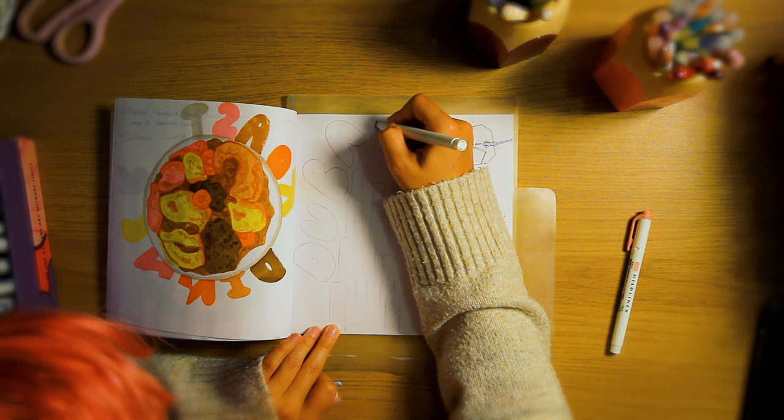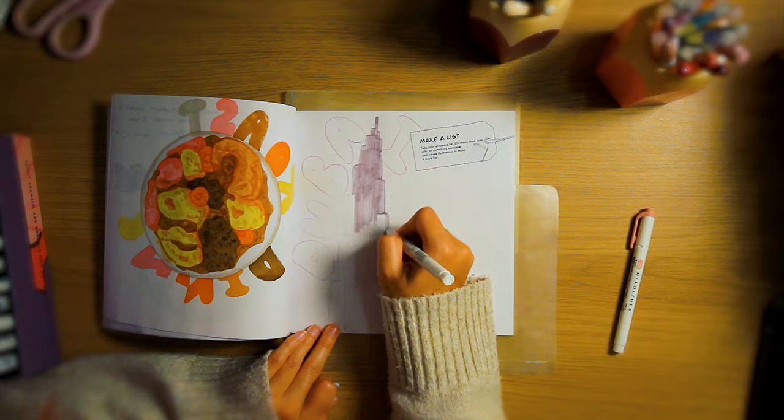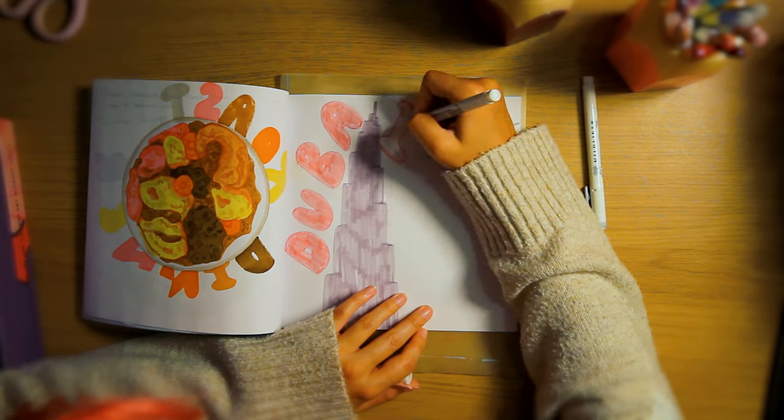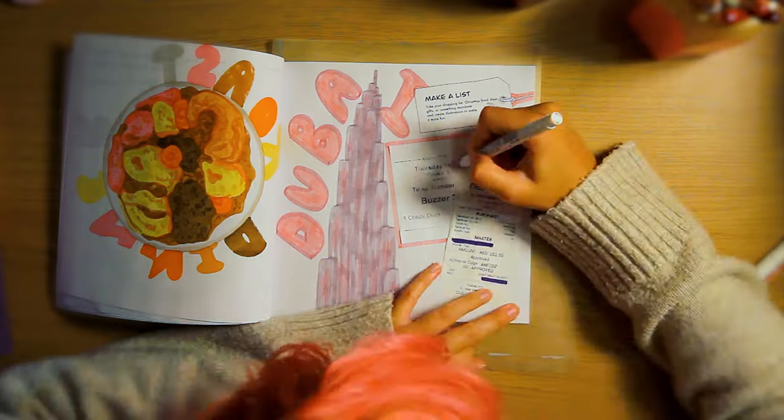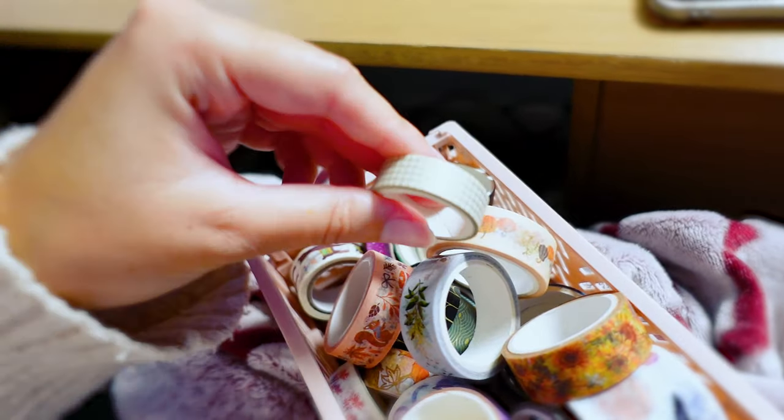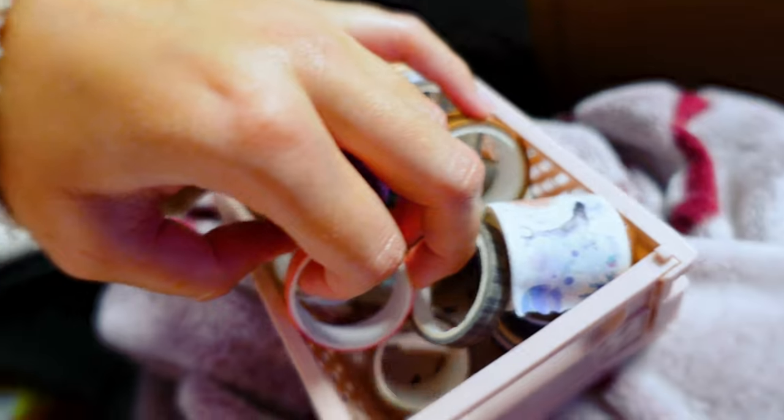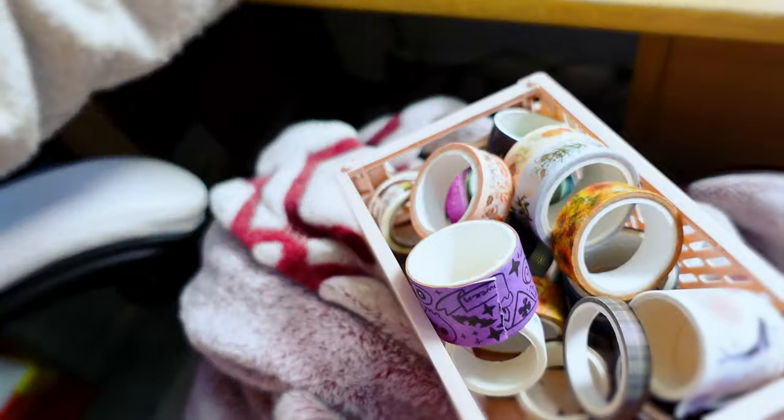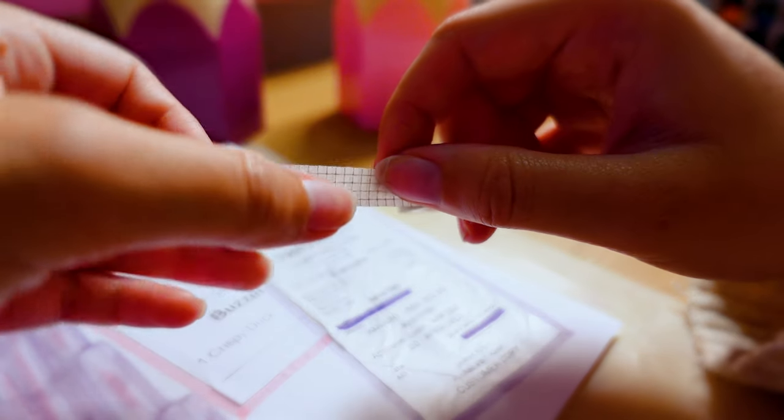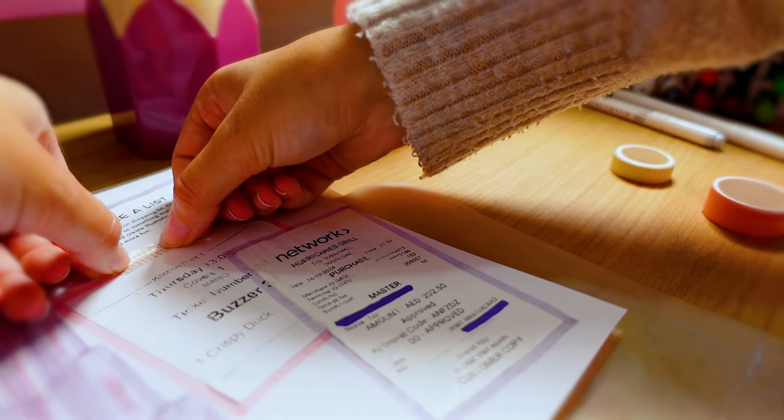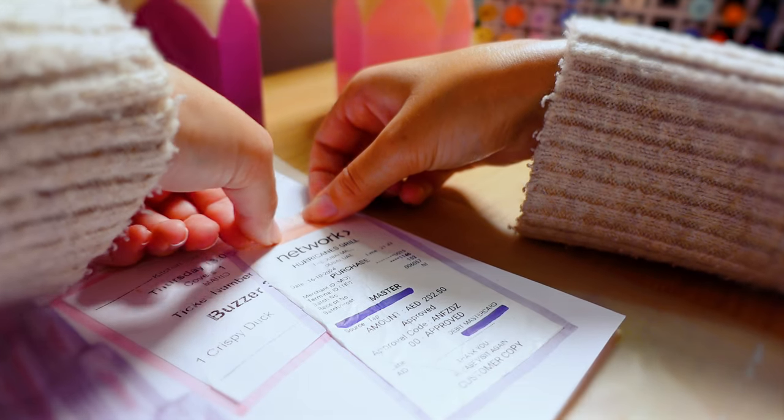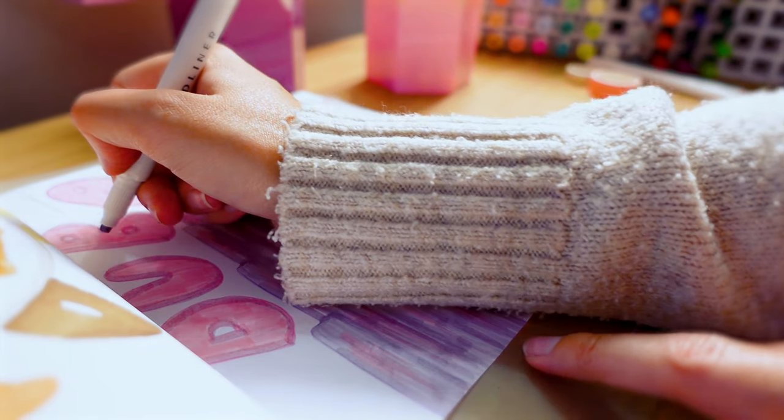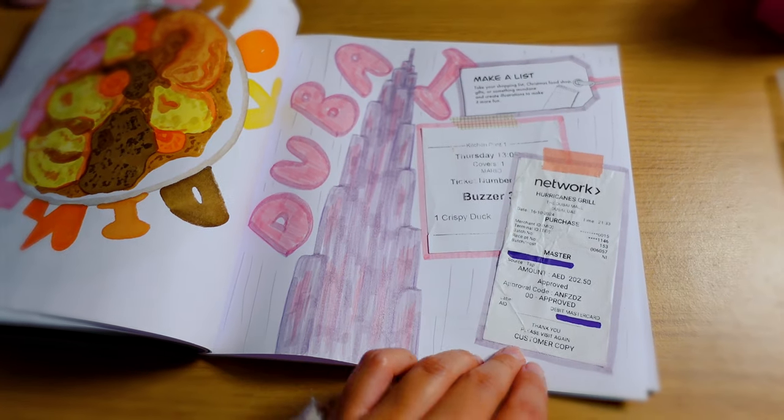We need to make a list. Take your shopping list, Christmas food shop, gifts or something mundane and create illustrations to make it more fun. I actually recently went on holiday to visit some friends so for this one I wanted to reference that. I'm using the mild liners and attempting to draw the Burj Khalifa in a loose style because I went to Dubai and I'm sticking in some receipts from the trip. I don't expect these to last very long because they're probably thermal labels but they are perfect for this prompt. Picking out some matching washi tapes to make this page look a little bit more cute. It's kind of a pink and gray themed page and honestly this turned out a lot better than I ever thought it would. I think it's a really cute spread. We're just adding some lines for the background because I felt like it needed something to kind of tie the page together and this is how the prompt has turned out.